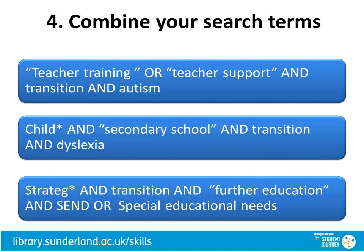Taking the middle example — child with the star — this is truncation, and it will also cover child and children. We also want to find secondary school, and we've made this into a phrase so the words are together in that order. And we've also added transition and dyslexia. This is quite a complicated search, and until we try this, we don't know if it will bring good results back. We're asking for quite a few elements to be present, so we have been quite specific.